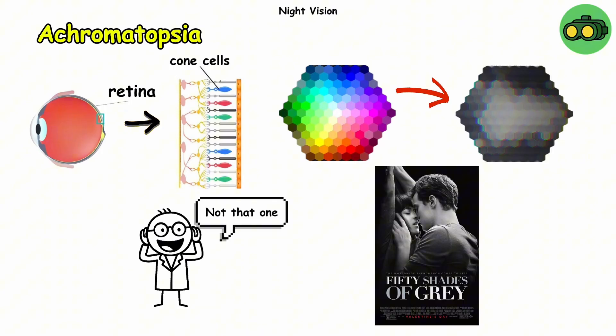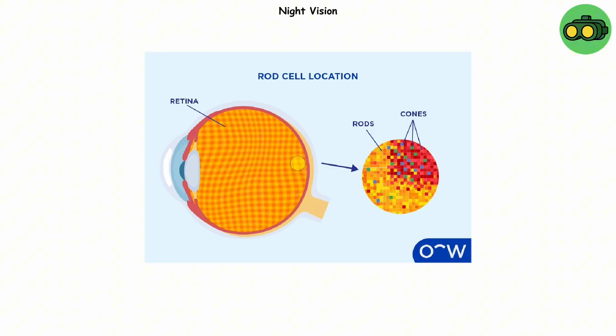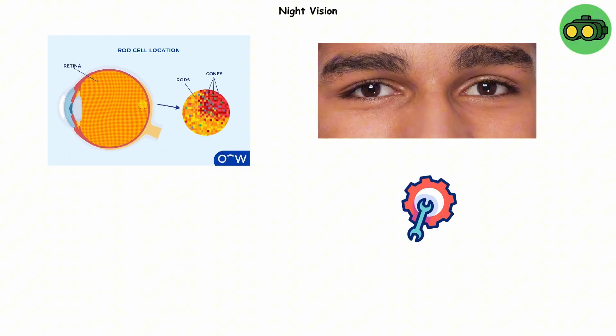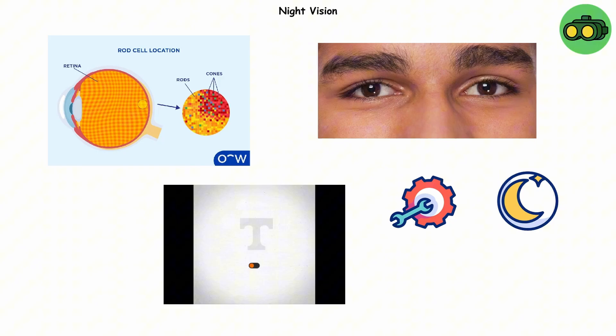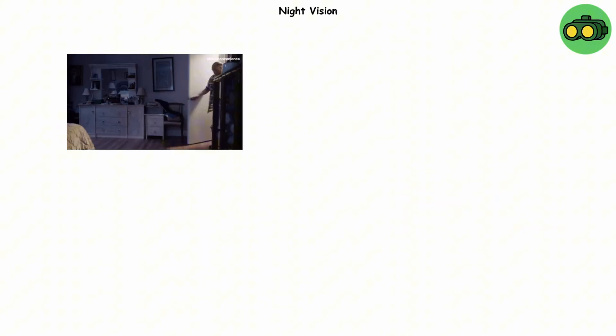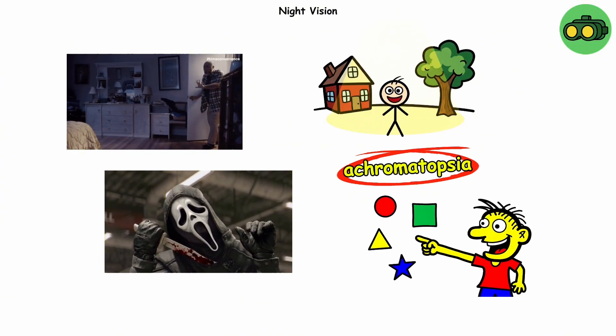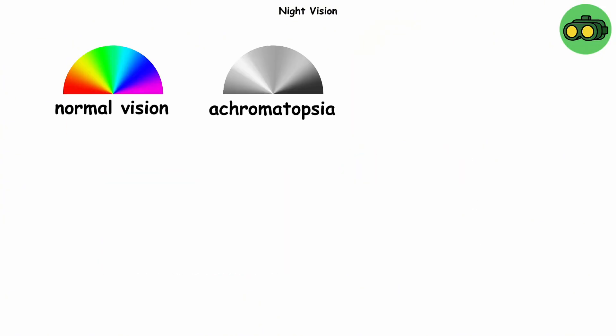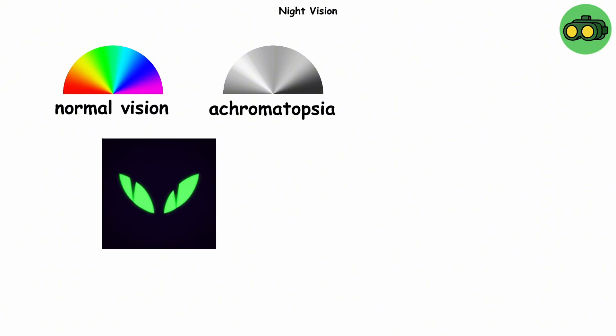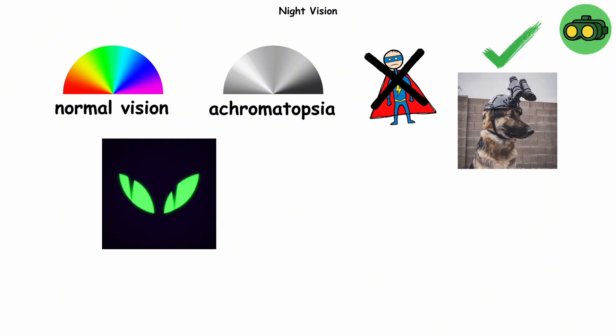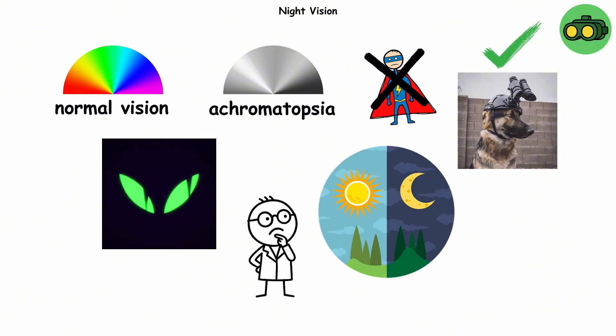No, not that one. But the rod cells, which handle low light, become the main characters. Their eyes are basically tuned for darkness, like switching your phone to dark mode permanently. While most of us stumble around at night like NPCs in a horror game, people with achromatopsia can spot shapes and details others can't. Evolution gave them fewer colors, but sharper shadows. It's not exactly superhero level vision, but it's definitely night vision goggles energy. Between night vision and color vision, which would you choose?